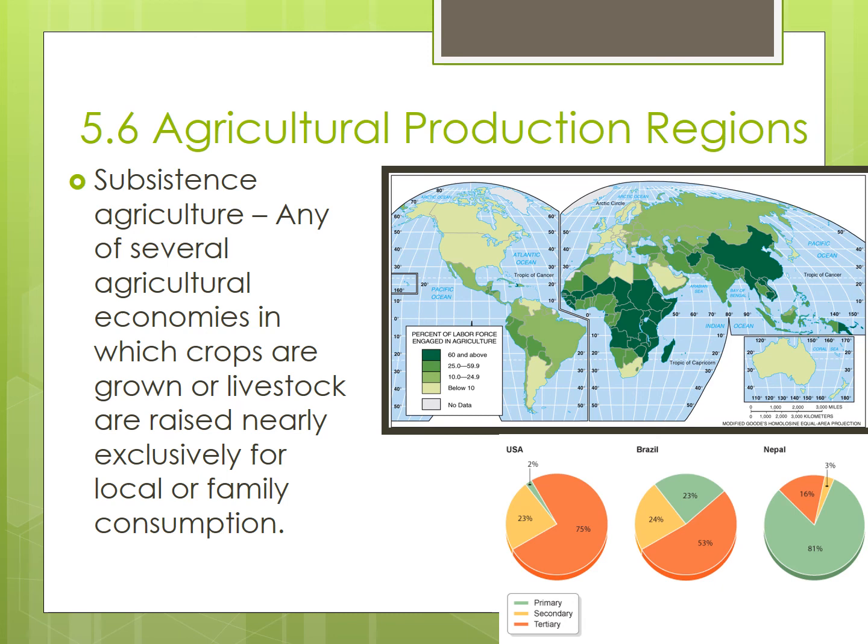Hello Human Geographers, we are back at it again this evening. Tonight we are going to look at two major divisions in terms of how and where agricultural goods are produced. These two divisions are between subsistence and commercial agriculture.